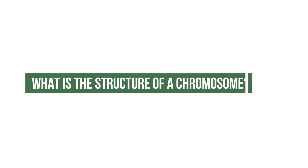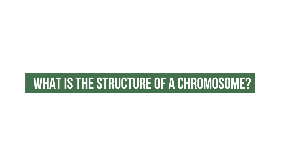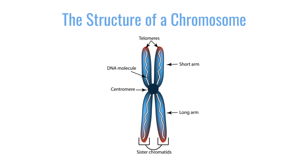What is the structure of the chromosome? Each chromosome is organized so that we can tell two discrete parts: a short arm and a long arm, separated by a central part called the centromere. The short arm is called the P arm, and the long arm is the Q arm.